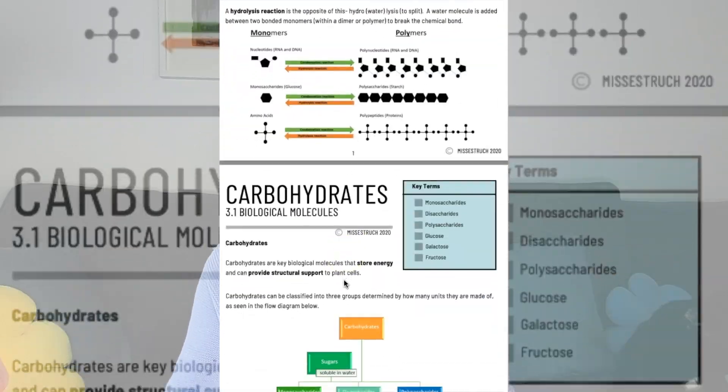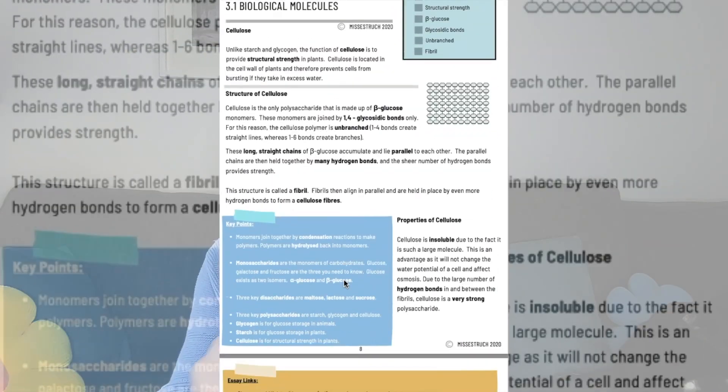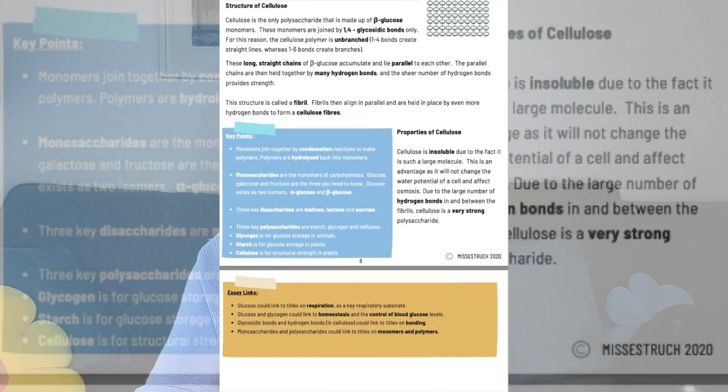Not only that, on every page I've highlighted the key terms and the key marking points that you need to know, presented in a key terms box at the top. For the AQA ones, you also have essay links — which was probably the most popular feature this summer when students were preparing for essays. For every topic, I tell you another topic you could synoptically link it to for your essays.